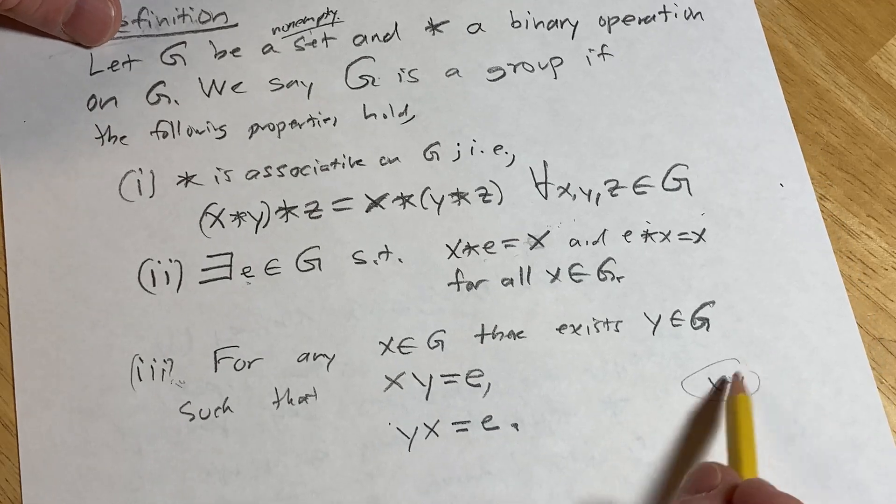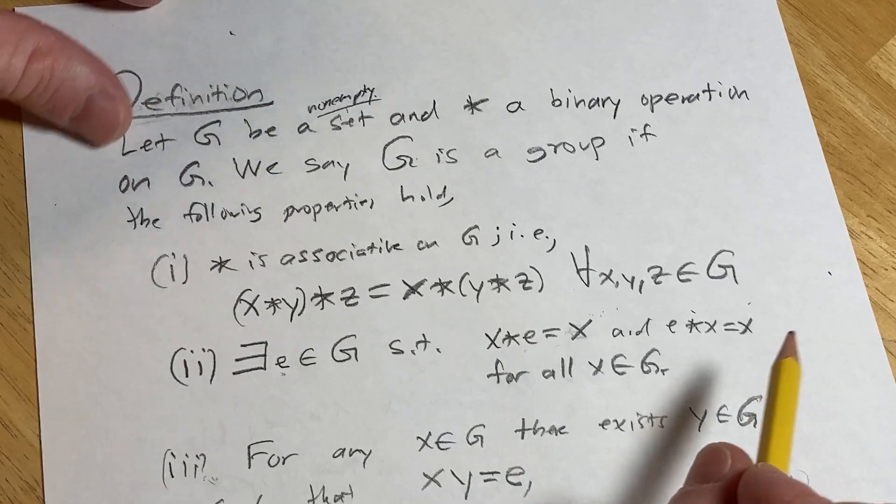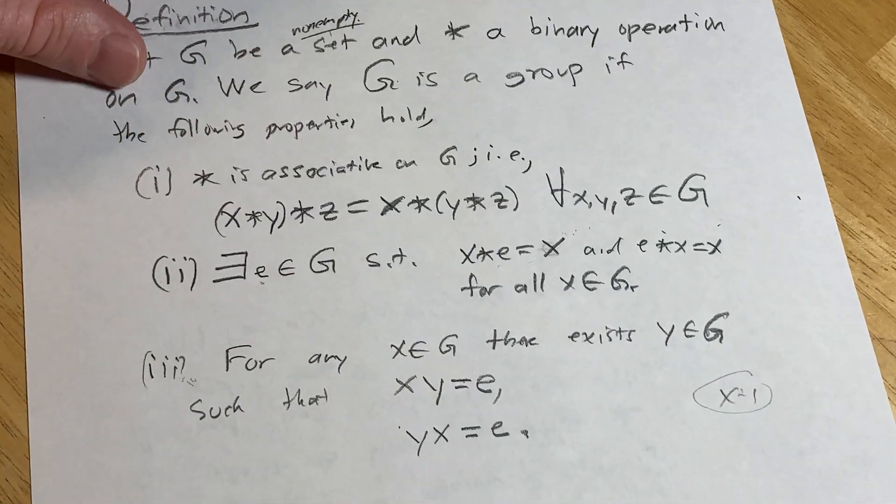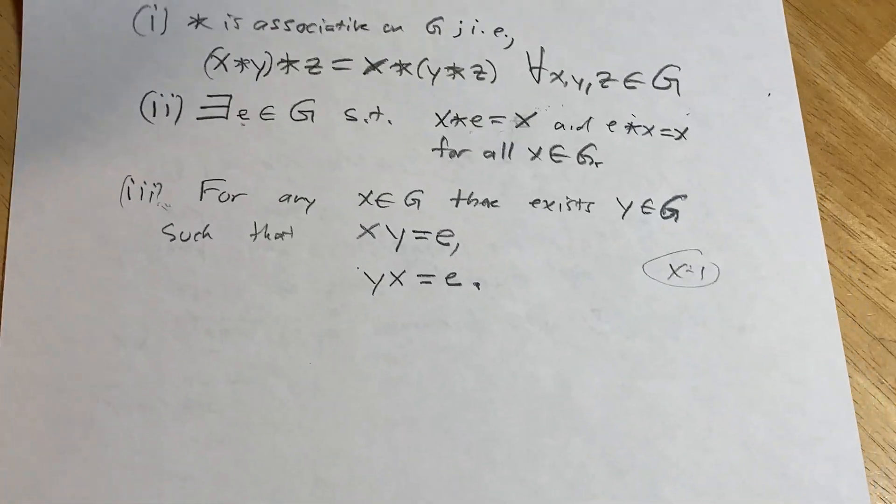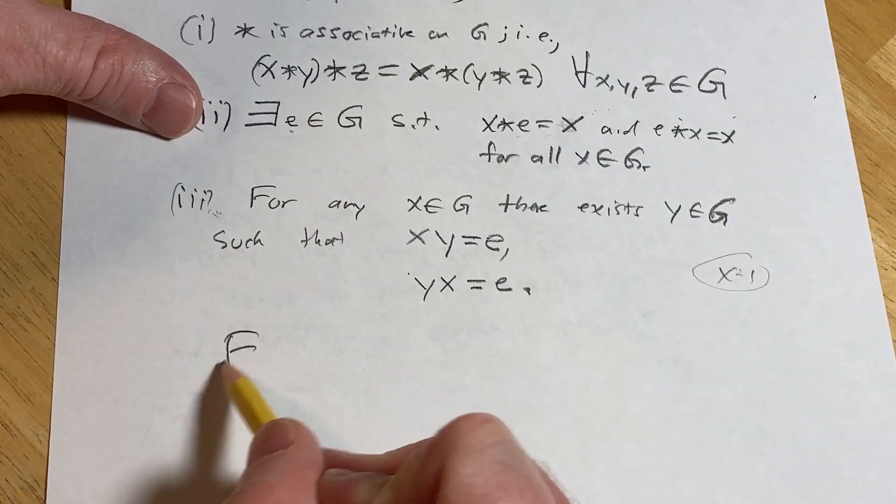Here, y would be x inverse. And you can also show it's unique. So that is the definition of a group. That was a lot of information. Hopefully this has helped you in some way. Maybe I can give you a really quick example before I end this video.